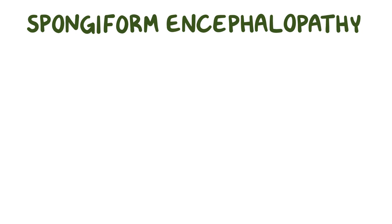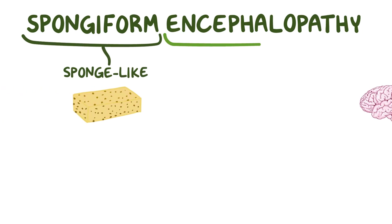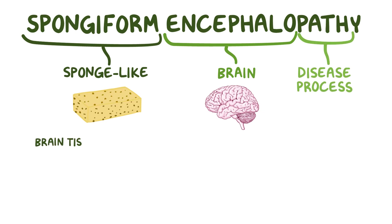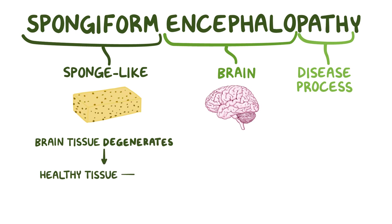Spongiform encephalopathy can be broken down: spongiform means sponge-like, encephalo refers to the brain, and path refers to a disease process. Spongiform encephalopathy is a disease where the brain tissue degenerates and healthy tissue gets replaced by clusters of tiny, liquid-filled, thin-walled cavities called cysts, making the brain look like a sponge.